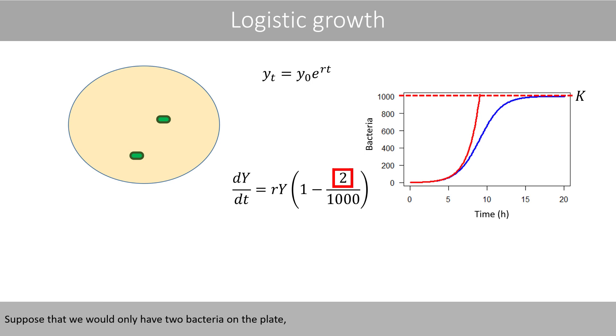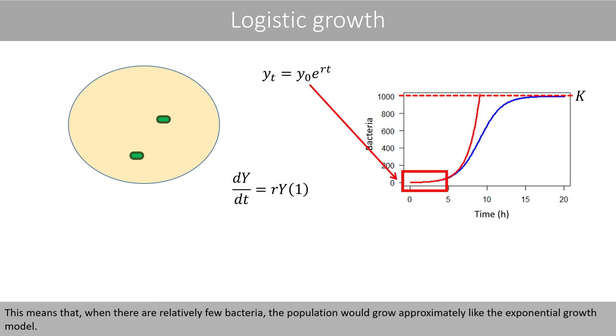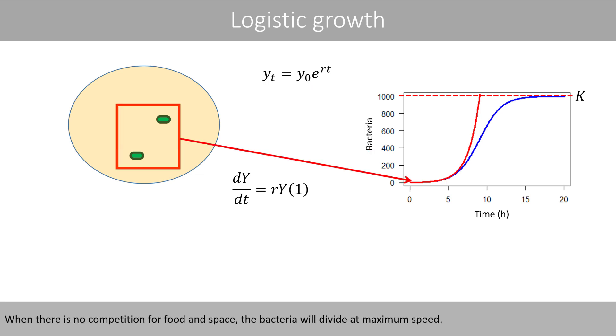Suppose that we would only have two bacteria on the plate, and that the carrying capacity is one thousand. That would mean that this term is approximately equal to zero, which means that the value inside the brackets is approximately equal to one. By simplifying this equation, we will end up with the equation for simple exponential growth. This means that when there are relatively few bacteria, the population would grow approximately like the exponential growth model. When there is no competition for food or space, the bacteria will divide at maximum speed.